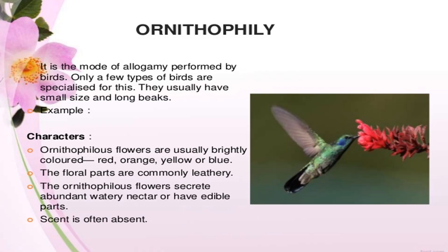Ornithophily is the mode of pollination in which the agent is a bird. Only a few types of birds specialized for such pollination have small size and long beaks. The characteristic features of such flowers: they should be brightly colored — red, orange, yellow, or blue. Flower parts are commonly leathery, and ornithophilous flowers secrete abundant watery nectar or have edible parts. Scent is often absent.